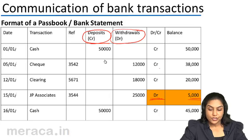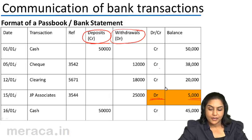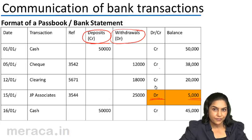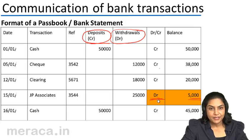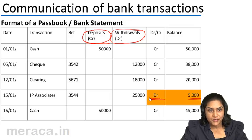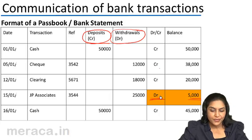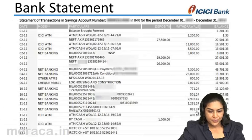Please note that a credit balance of the bank indicates a favorable balance and therefore a debit balance in the account holder's books. Similarly, an overdraft is a debit balance in the books of the bank, but it would be a credit balance in the account holder's books. We will be discussing this in detail further on.